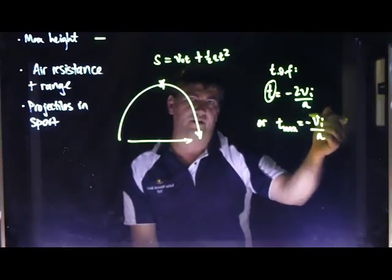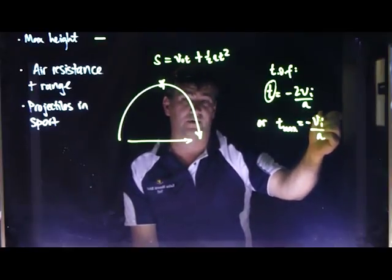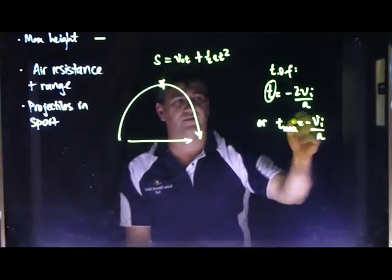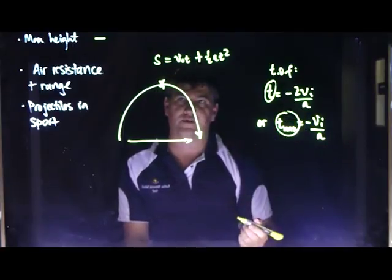So this negative, it doesn't really matter, all we're caring about is the vertical component initially and acceleration due to gravity is going to be negative because it's downwards, which means that cancels out, which means you're left with a positive value for here.